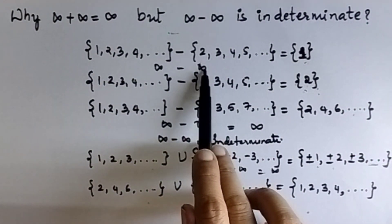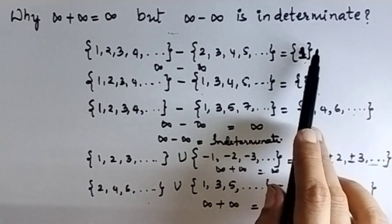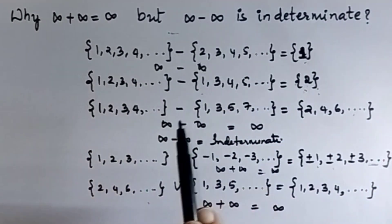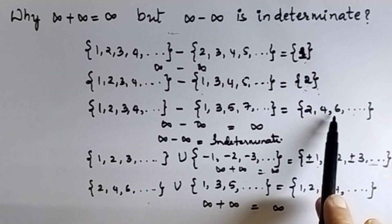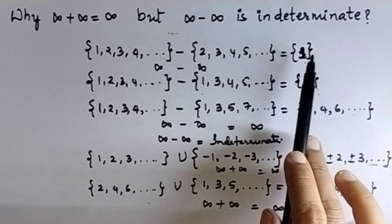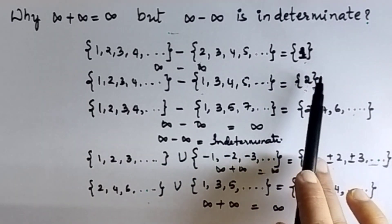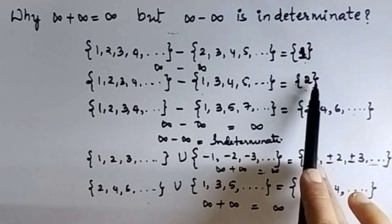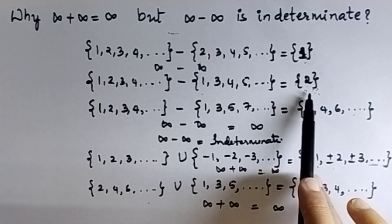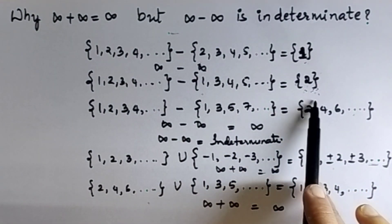If you subtract an infinite set from another infinite set, sometimes the result is finite, and sometimes the result is infinite. If the sets are finite, in that case also we don't get a unique answer — it differs from example to example. There is no unique answer to generalize.